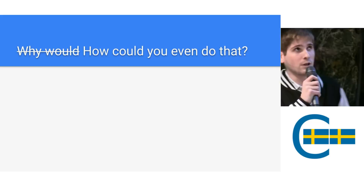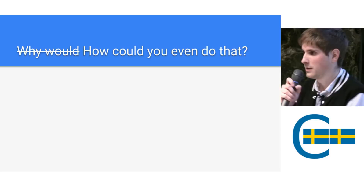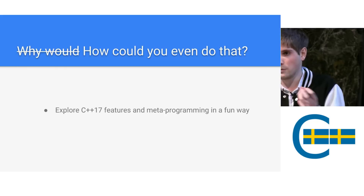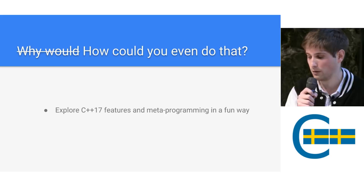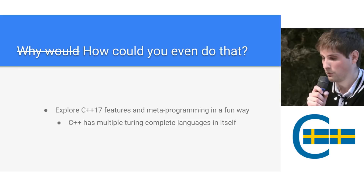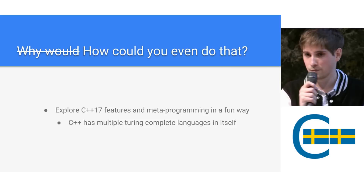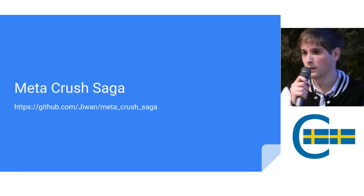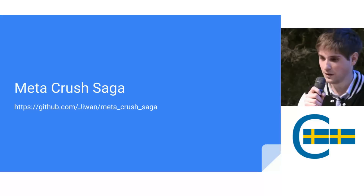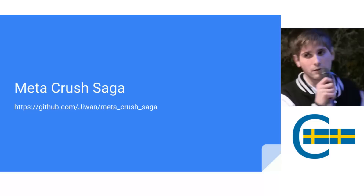Maybe the question you should ask is not why would you do that, but how could you even do that? It's possible because you have features in C++ that permit you to do this. Doing that kind of pet project maybe doesn't make sense at work, but it makes sense to explore these features. C++17 metaprogramming is kind of fun to do by making a game. It's also a nice way to prove that C++17 is almost like multiple Turing-complete languages within itself. If you want to take a look at my project, you can go on GitHub. Some parts will be a bit different — I tried to simplify things in these slides.